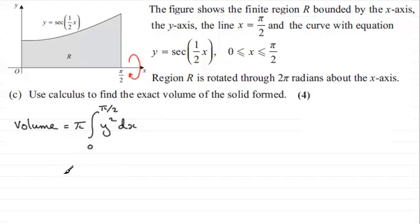So all we need to do then is just fill in our value for what y is. Well we're told that y is equal to sec(x/2), and so we just need to square that. So that's going to be sec²(x/2), and we're integrating that with respect to x. And the limits then are going from 0 to π/2.